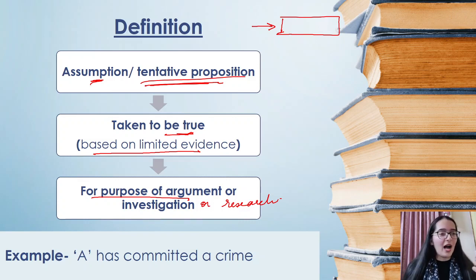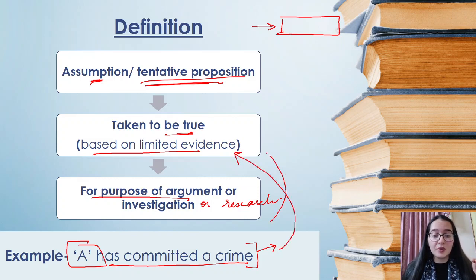Let's take one example. Consider yourself a police officer, and you've made a hypothesis - you've assumed something: that there is a person by the name of A who has committed a crime. When you've thought something so significant, you must have some evidence. It is based on limited evidence and is assumed to be true, so that you can conduct your investigation. This is the definition of hypothesis. I'll repeat: it is an assumption or a tentative statement which is assumed to be true because it is based on limited evidence, for the purpose of argument, investigation, or research.